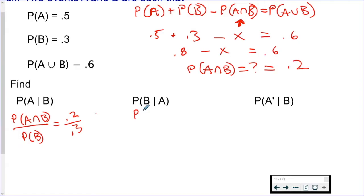The next one is B given A. So probability of B intersect A over probability of A. Now this and this are the same thing. Remember because it's just being multiplied. So now I have 0.2 over probability of A is 0.5. Just reduce that and that's our answer.